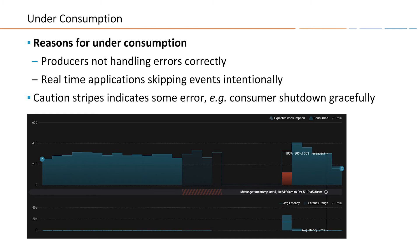You can also see caution stripes, which indicate an error. If a consumer or producer doesn't shut down gracefully, we cannot know for sure how many messages were produced and consumed — we're missing some information. If you see those caution stripes, be aware that the data shown is in doubt. You should go back and make sure everything is okay with producers and consumers, because we believe they are not sending all the information we need in order to monitor.